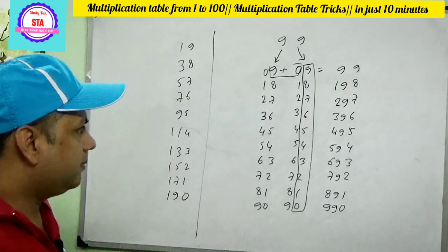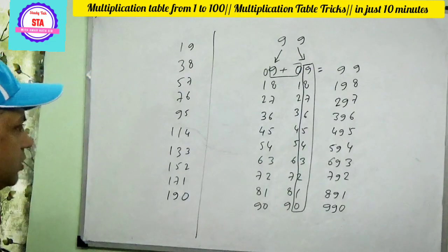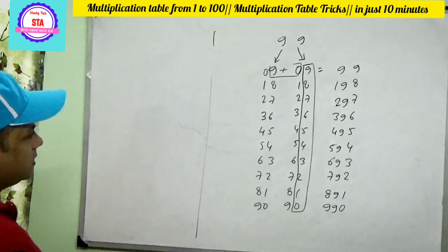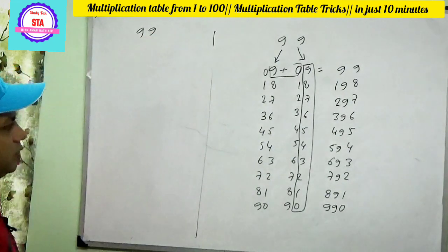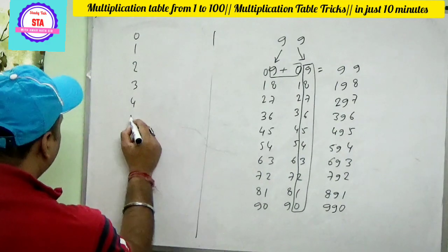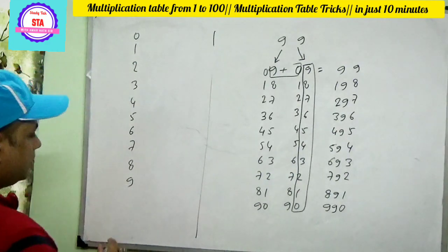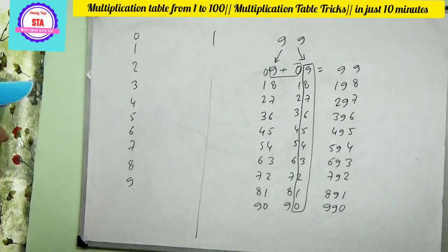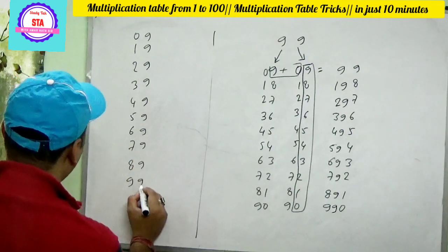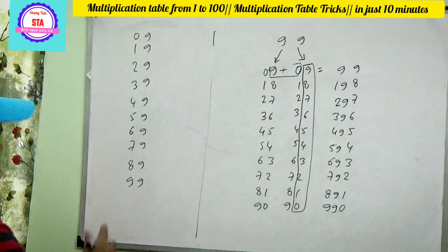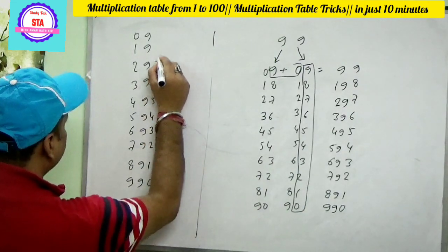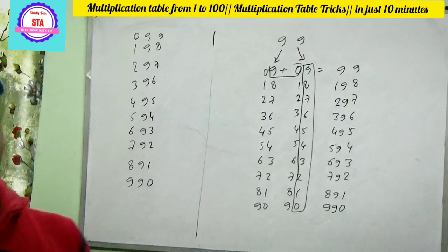It's the table of 99 — it's the only method. You can write: zero, one, two, three, four, five, six, seven, eight, nine — start from zero till nine — then again the second place is only nine, nine, nine, nine, nine, nine, nine, nine, nine, nine. Write down in the opposite direction: 0, 1, 2, 3, 4, 5, 6, 7, 8, 9 — that's the table of 99.